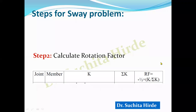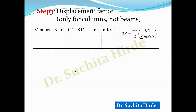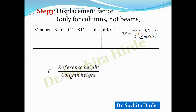Once we calculate the rotation factor, the next step is to calculate the displacement factor. Please remember that the displacement factor is calculated only for columns, not for beams. For calculation of the displacement factor we use a specific table with columns: member, K (relative stiffness), C, C², K×C, M, and M×K×C².